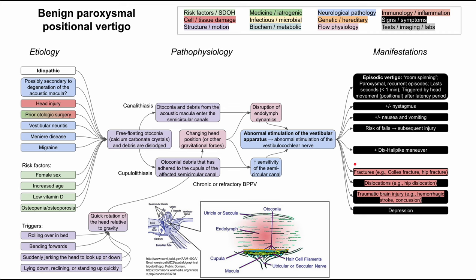Longer-term or more severe complications of BPPV relate primarily to the risk of falls. These include bone fractures such as Colles fracture and hip fracture, dislocations — commonly hip dislocation — and brain injuries like hemorrhagic strokes and concussions from falling and hitting the head. This disease can also be debilitating, leading to decreased quality of life and depression.